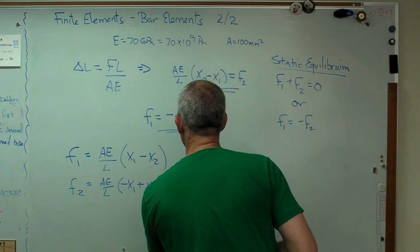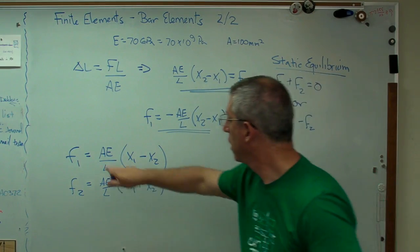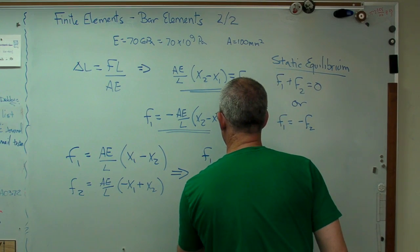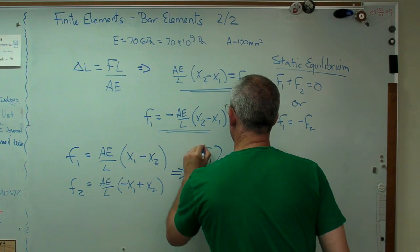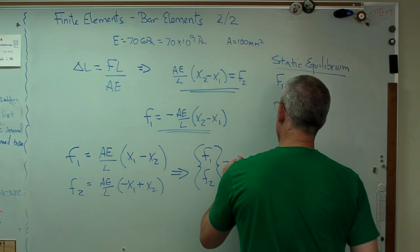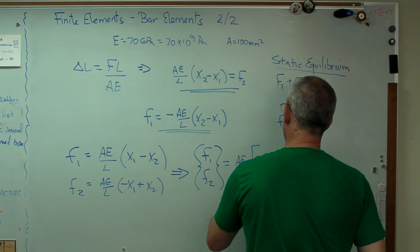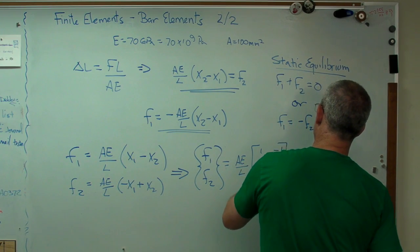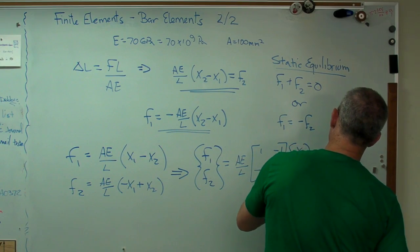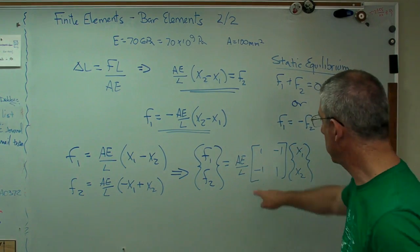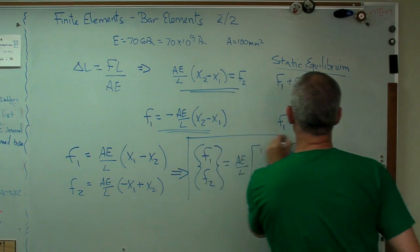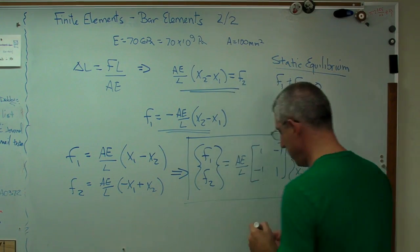So let's write this in matrix form. Well, that's obviously the force vector equals. Well, that term is the same in both of them. So I'm going to put that out front. There you go. That's what a finite element looks like. This is the mathematical description of a bar element.